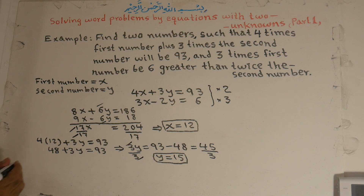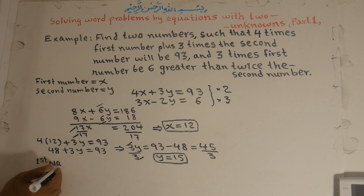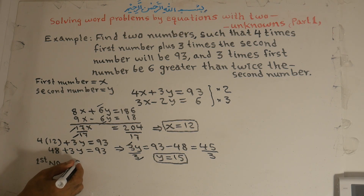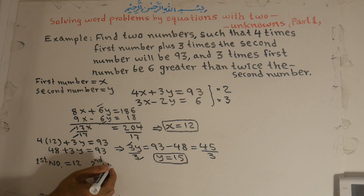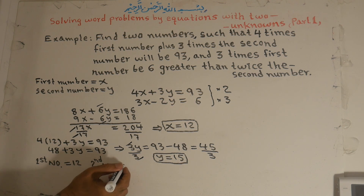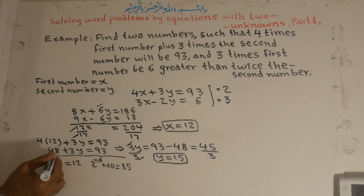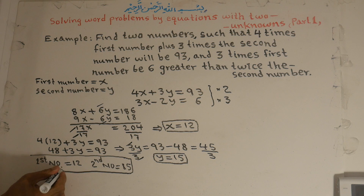From here, the first number — which is x — is equal to 12, and the second number — which is y — is equal to 15.